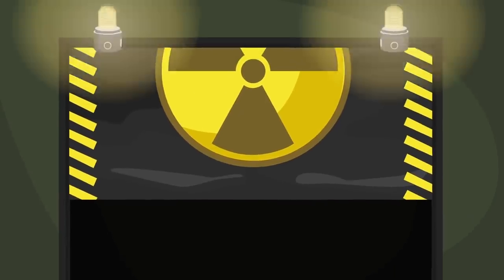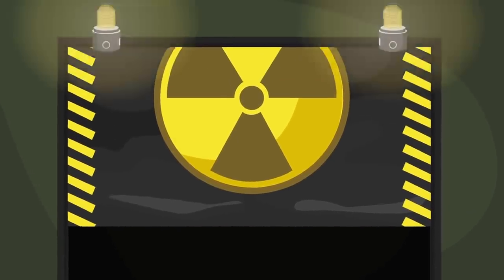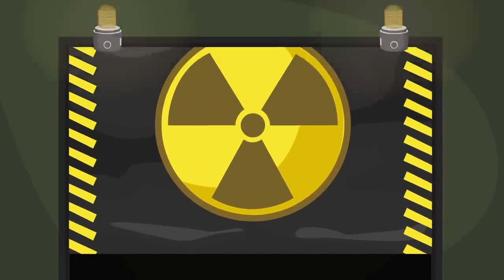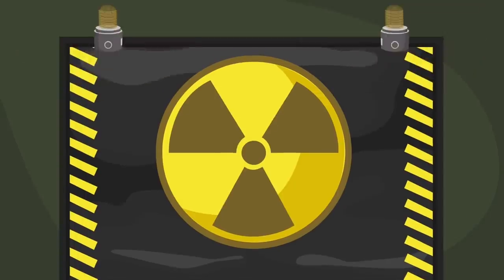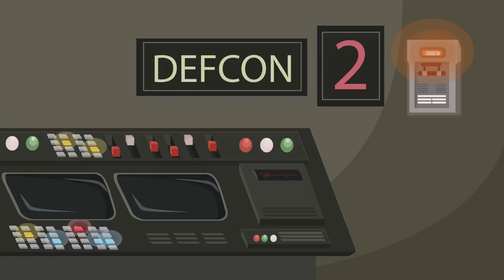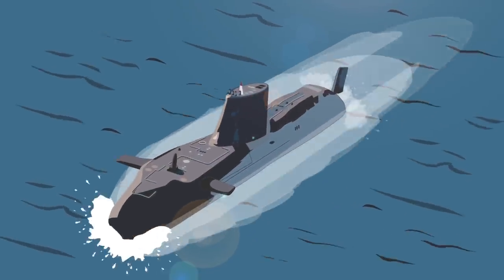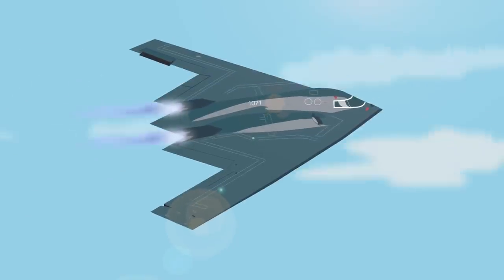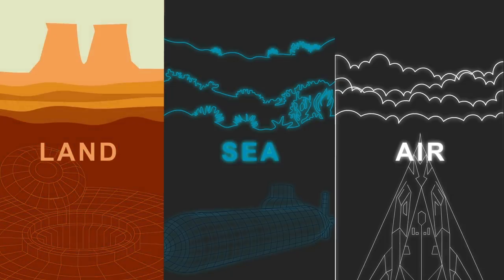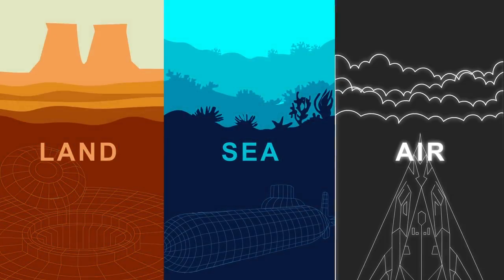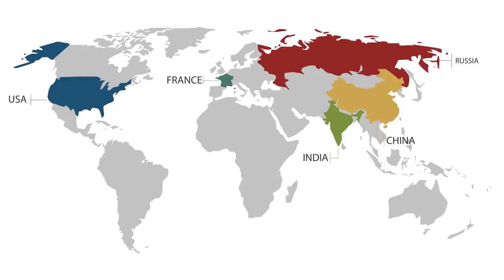But not all these countries are fully capable of enacting the MAD doctrine. Only countries who have three legs of nuclear power are considered truly capable of MAD, as their own nuclear weapons cannot be wiped out in a single strike. This is known as the Nuclear Triad, and in essence it means a country capable of launching nuclear weapons from three separate places — the land, sea, and sky. Of the aforementioned eight countries, only five currently have this power: the United States, Russia, China, India, and France.